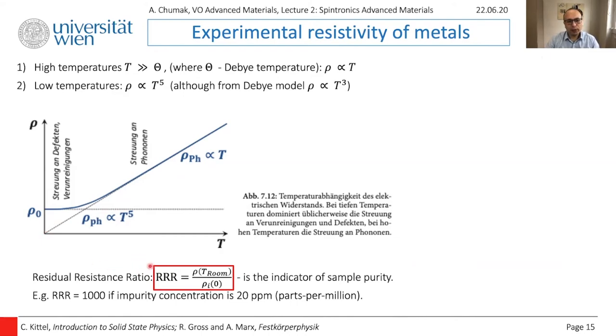We need to introduce one more parameter, the residual resistance ratio, triple R, which you can find as resistivity of your material at room temperature normalized with resistivity at zero temperature. Usually you measure down to some temperature, then extrapolate to know rho zero. This RRR is an indicator of sample purity. A good conductor has RRR equals to 1000. In this case, concentration of impurities is 20 parts per million. This is good quality. This value can be higher if you try hard to make higher quality material, or if you have bad conductors, then this value can be 10 or something.